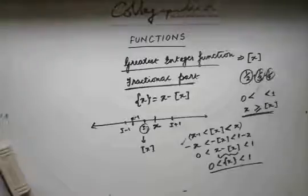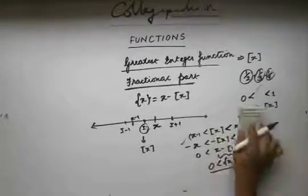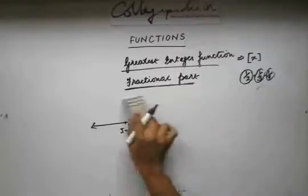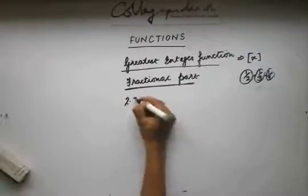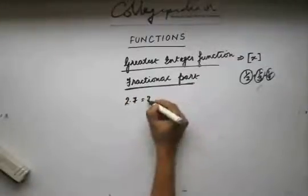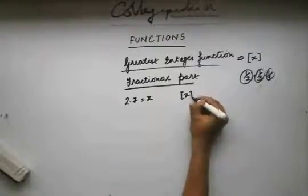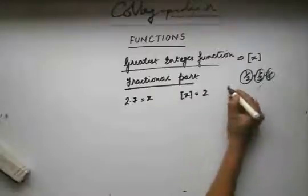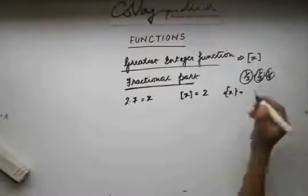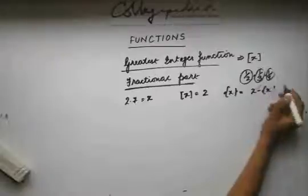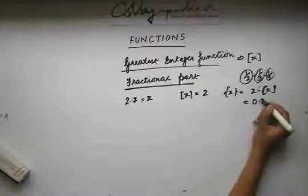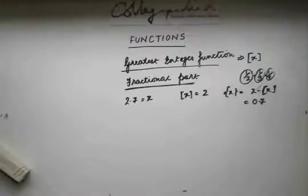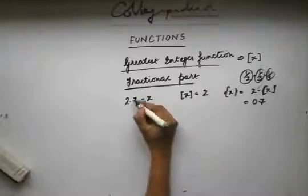Let's see what the fractional part of positive and negative real numbers is. Let's say I have the real number 2.7. Box of x is 2. The fractional part, defined as x minus box of x, is 0.7. So in the case of positive real numbers, the fractional part is just the digits after the decimal point.